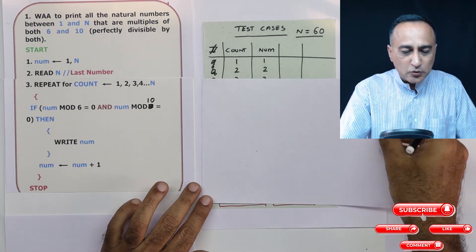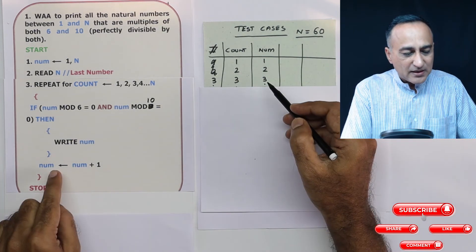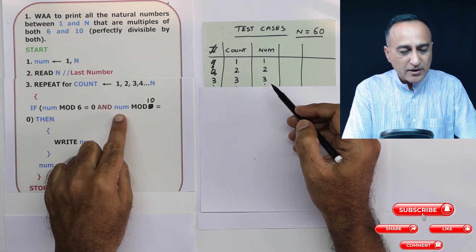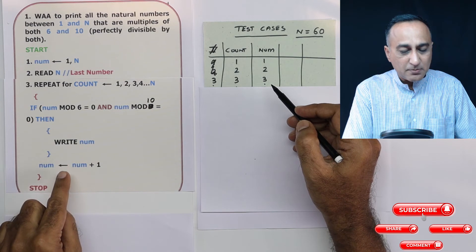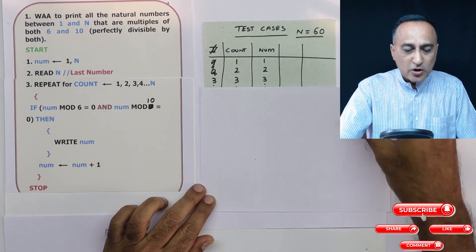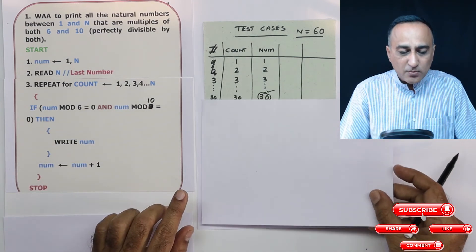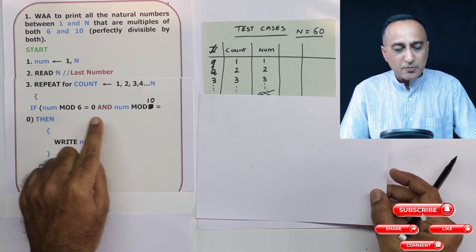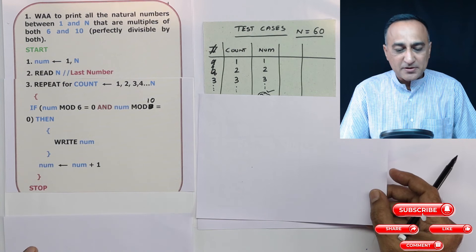Then I come to three. When number becomes three, three mod six is three, so it will not even go to the end part. It will not print the number. Number becomes four. So now if you see, till almost 29, no number is divisible by both 6 and 7, and the remainder happens to be zero.